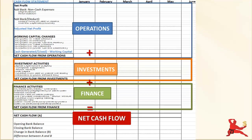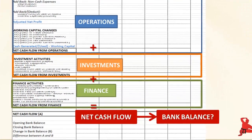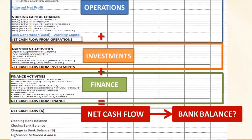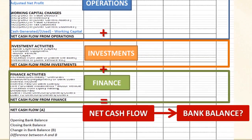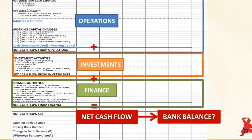When you add up the cash flows from each of these activity categories, you get the overall net cash flow for your business for the month or quarter or year, depending on what period you're looking at. And at the bottom of the statement, you see the impact of the net cash flow on your bank account.